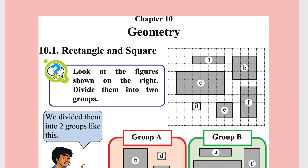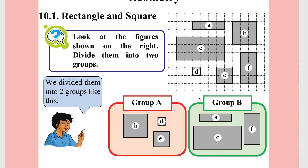Shape D has equal length and breadth. Shape E also has equal length and breadth. What about shapes A, C, and F? Their length and width are not equal. So we make two groups: Group A, where the side length is the same (length and breadth are equal) — shapes B, D, E — and the remaining shapes A, C, and F, where length and breadth are not equal.